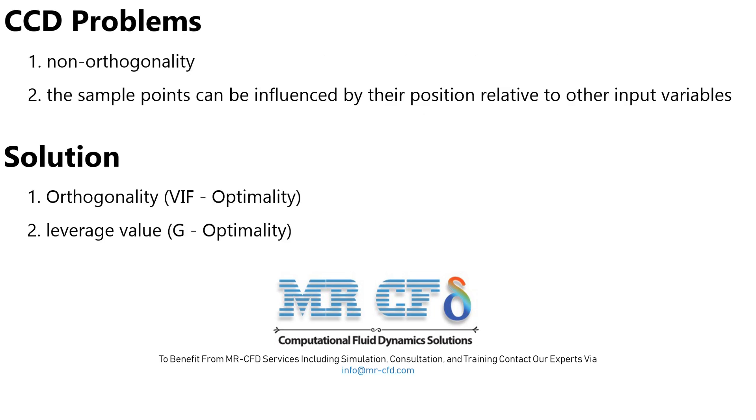To solve the two problems of this model of experimental design, this should be done. One, to minimize the degree of uncertainty or to increase the intensity, a variance inflation factor or VIF is used. Therefore, to solve the problem of increasing the variance of the coefficients of the model due to the non-orthogonal degree, it is possible to use the optimization method of the variance inflation factor or VIF optimality.